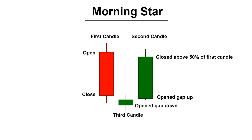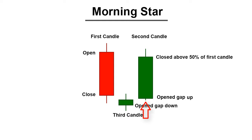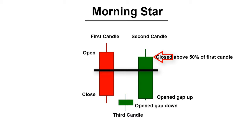The first candle of the Morning Star pattern is bearish, opening near the high and closing near the low. The first candle must have a medium or large real body, but not very large. The second candle is a short bullish or bearish doji, or a small body candlestick. The third candle is bullish, opening near the low and closing near the high, and must close above the middle of the real body of the first candle.